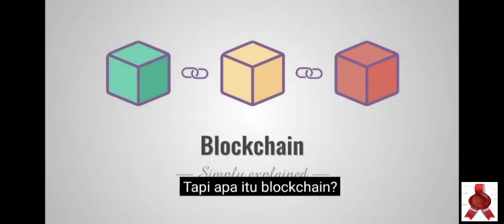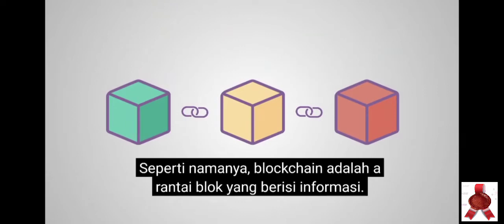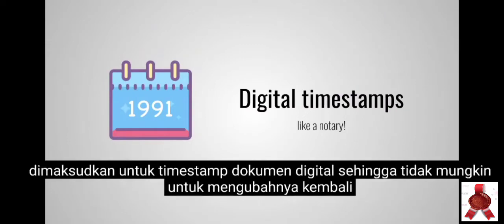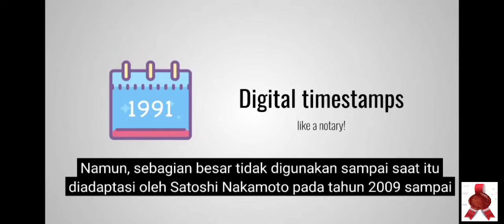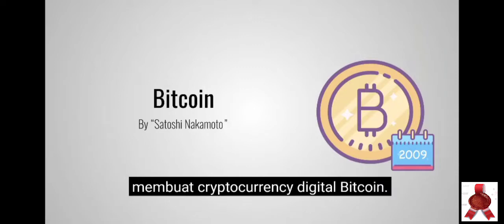What is a blockchain? How do they work, what problems do they solve and how can they be used? Like the name indicates, a blockchain is a chain of blocks that contains information. This technique was originally described in 1991 by a group of researchers and was originally intended to timestamp digital documents so that it's not possible to backdate them or to tamper with them, almost like a notary. However, it went by mostly unused until it was adapted by Satoshi Nakamoto in 2009 to create the digital cryptocurrency Bitcoin.